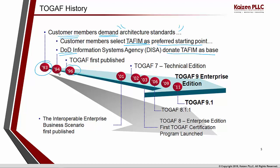During 1996 is when the first version of TOGAF was presented — TOGAF 1.0. During 2001, something very interesting happened: the standard was published in terms of an interoperable enterprise business scenario for the first time. During 2002, TOGAF 7 — the Technical Edition — was released. The major release of TOGAF 8 was during 2003, which was known as the Enterprise Edition, and also during 2003 the TOGAF certification program was launched. There was an update during 2006 for version 8.1.1.